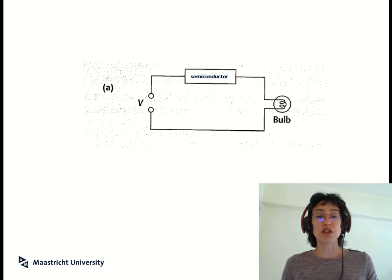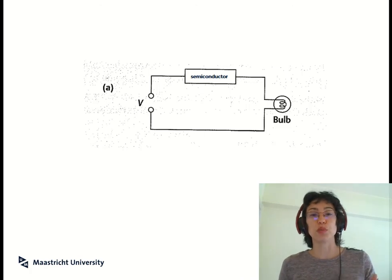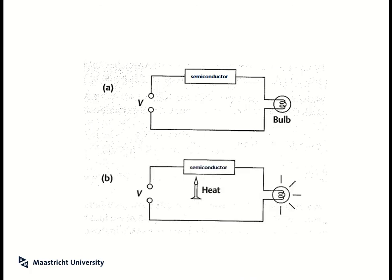And this is cool. Because essentially, it means - this is very oversimplified - but if I put a semiconductor into a circuit and it's low temperature, then in this case you can see my bulb would be off.